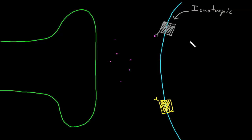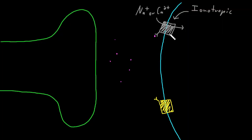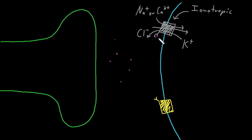The target cell will usually be excited if the activated ionotropic receptor allows sodium or calcium ions to pass, because they will usually flow into the neuron, bringing their positive charges in and causing depolarization. The ionotropic receptor will usually cause inhibition of the target cell if it allows chloride or potassium ions to pass. Chloride ions will usually flow into the neuron bringing negative charges in, making it more negative inside, and potassium ions will usually flow out, carrying their positive charges outside and also making it more negative inside.